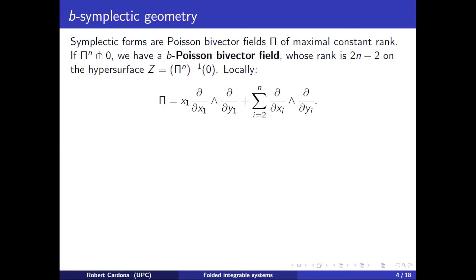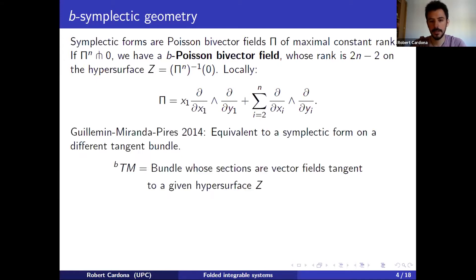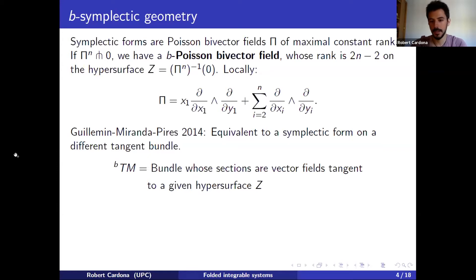For b-Poisson manifolds, there is also a Darboux theorem, due to Guillemin, Miranda, and Pires. There's a very nice framework, also introduced by Guillemin, Miranda, and Pires in 2014, which tells you that instead of working with a Poisson bivector field, you can look at it as a symplectic form on a bundle called the b-tangent bundle. This is defined as the bundle whose sections are vector fields tangent to the given hypersurface Z.